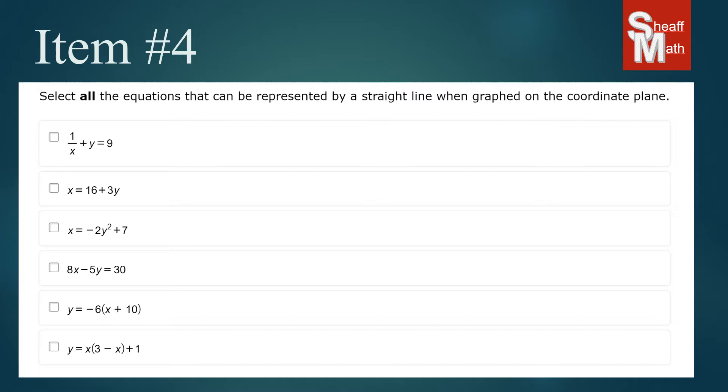We have six different equations, and now we have to determine which one of these is going to create a straight line. There could be more than one that creates a straight line.